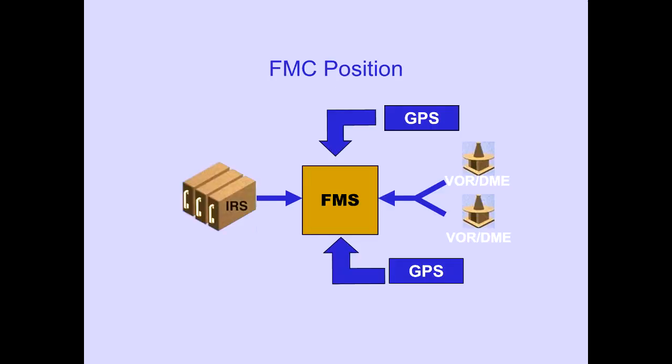The FMC position is a combination of IRS positioning, GPS positioning, and updating from the VOR DME radios. The prioritized navigational modes the FMC uses to determine its position are: 1- IRS localizer GPS, 2- IRS localizer DME-DME, 3- IRS localizer VOR DME, 4- IRS localizer, 5- IRS GPS, 6- IRS DME-DME, 7- IRS VOR DME, 8- IRS only, 9- GPS only, 10- DME-DME only.